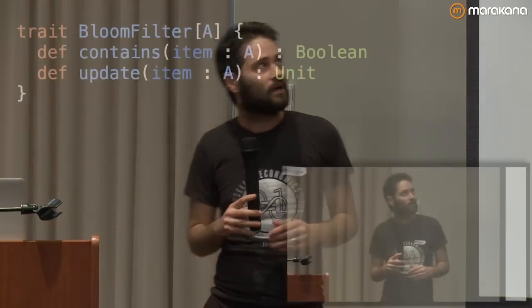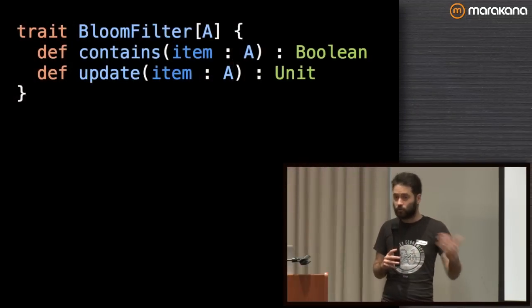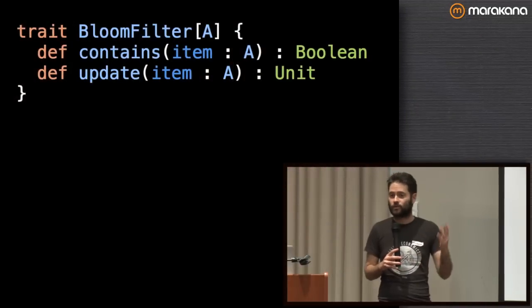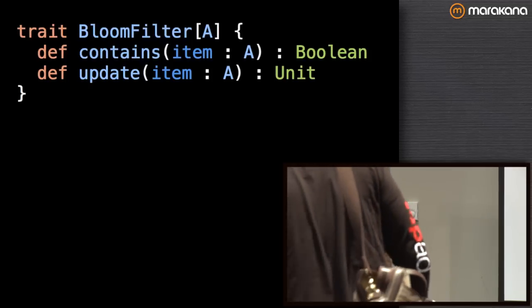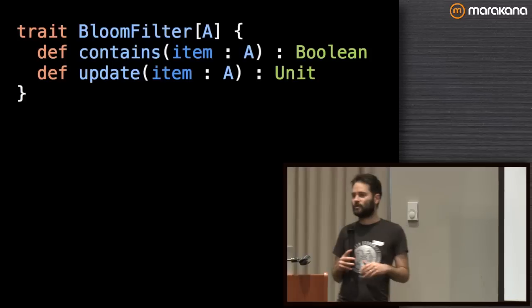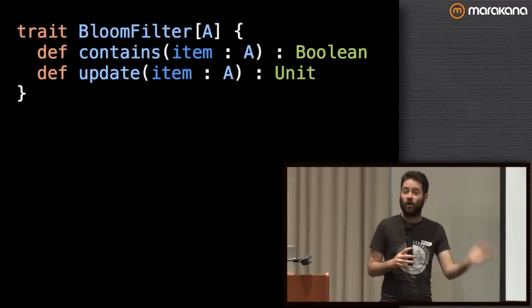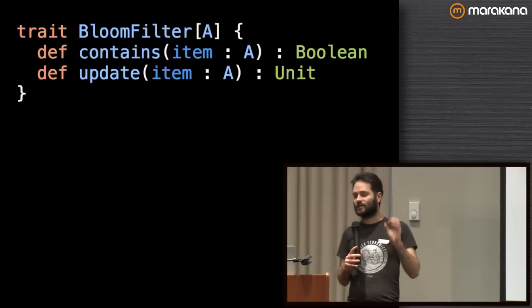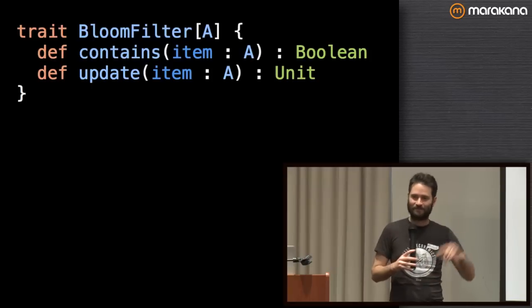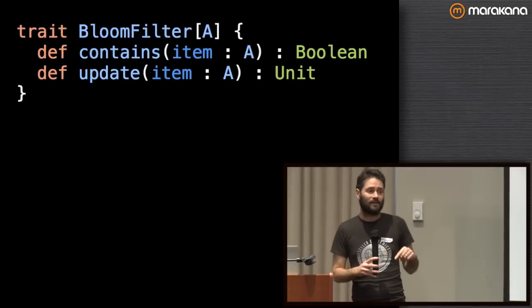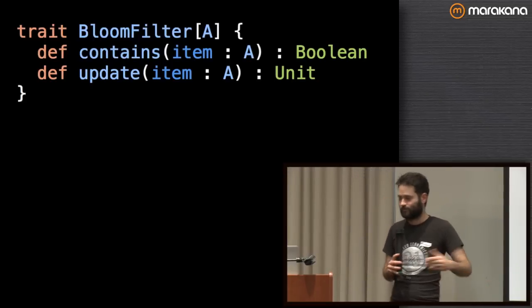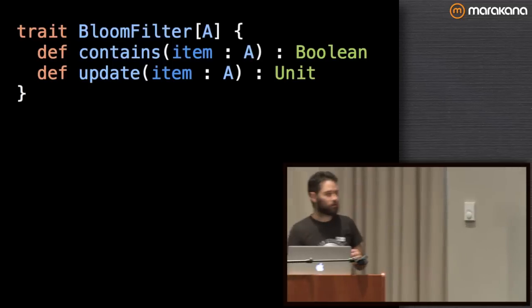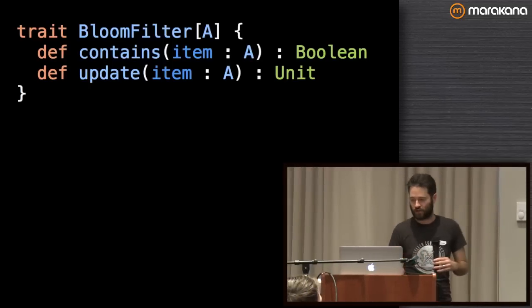If you were going to implement a Bloom filter, the simplest, most naive API might look like this: you need to be able to update it with a new item, and then query whether or not the Bloom filter contains that item. The Bloom filter — most of you probably know this — if the item has never been added, it will answer false. If it answers false, the item definitely was never added. If it answers true, it might mean the item was added, or it might be a false positive. That's how you might implement it in Java or something.